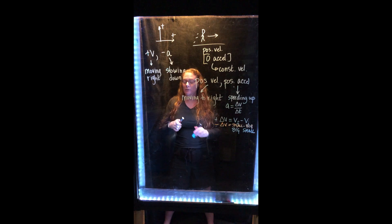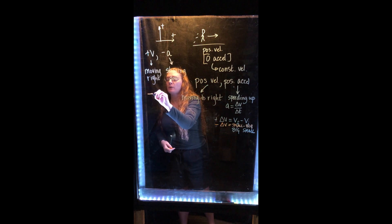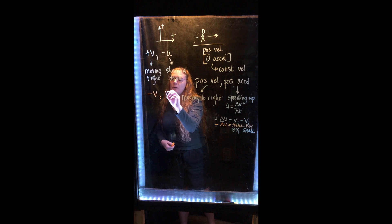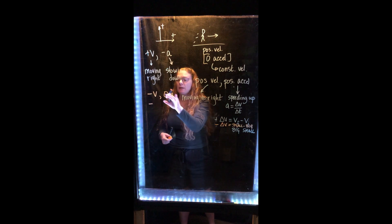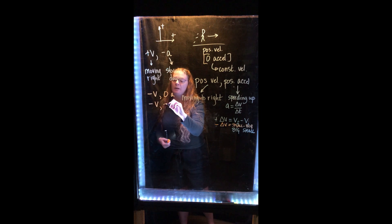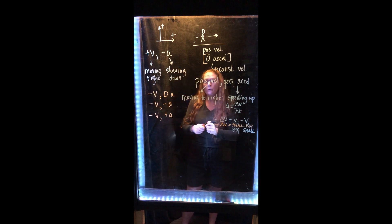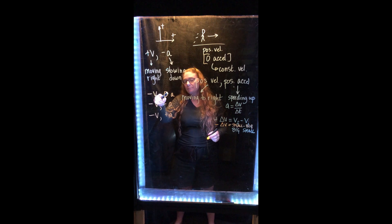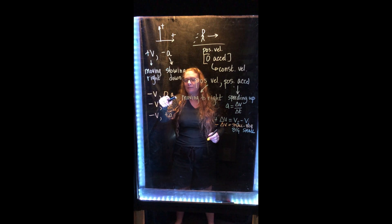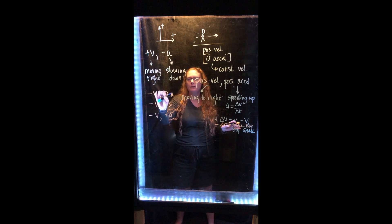Now I want you to figure out what the three sign combinations for negative velocity would be. Negative velocity with zero acceleration you can probably figure out quickly: negative velocity means moving to the left, and zero acceleration means holding at a constant speed — so we're moving to the left at constant speed.